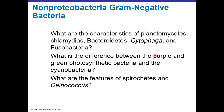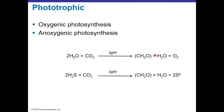Phototrophic bacteria can undergo photosynthesis in two ways. Oxygenic photosynthesis combines two water molecules and CO2 using light to produce carbohydrates, water, and oxygen. Anoxygenic photosynthesis combines two molecules of hydrogen sulfide plus CO2 with light to produce carbohydrates, water, and elemental sulfur.